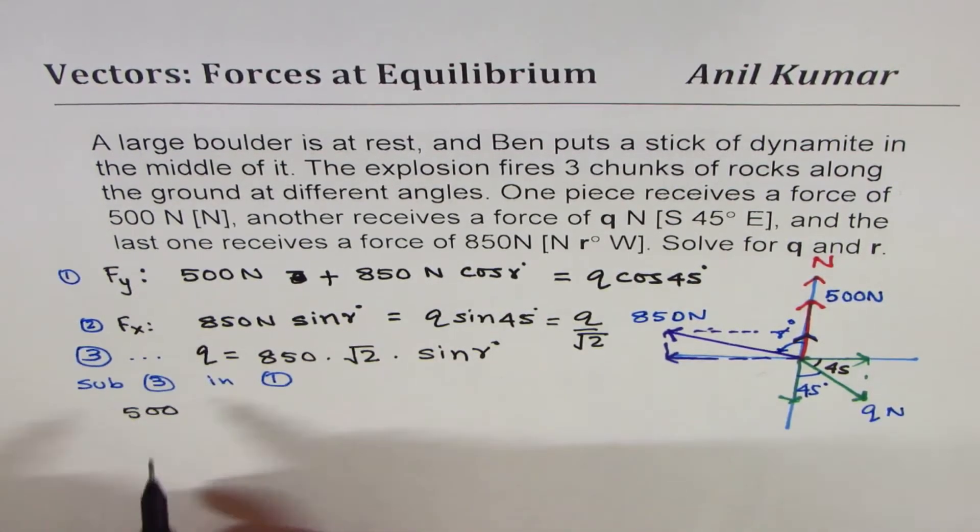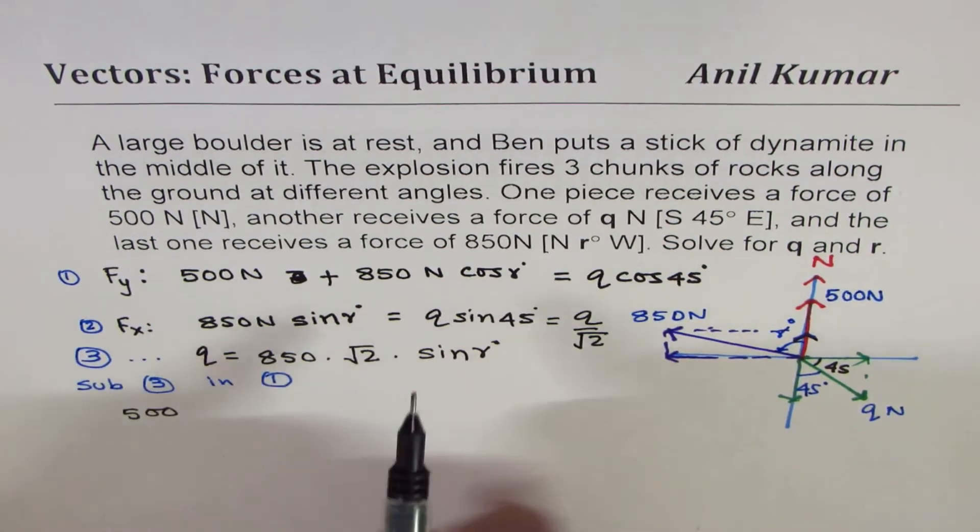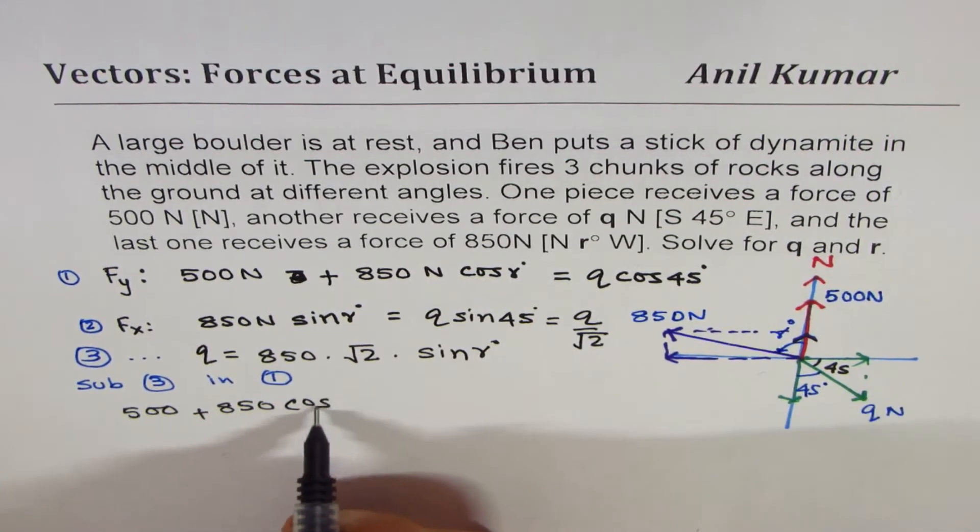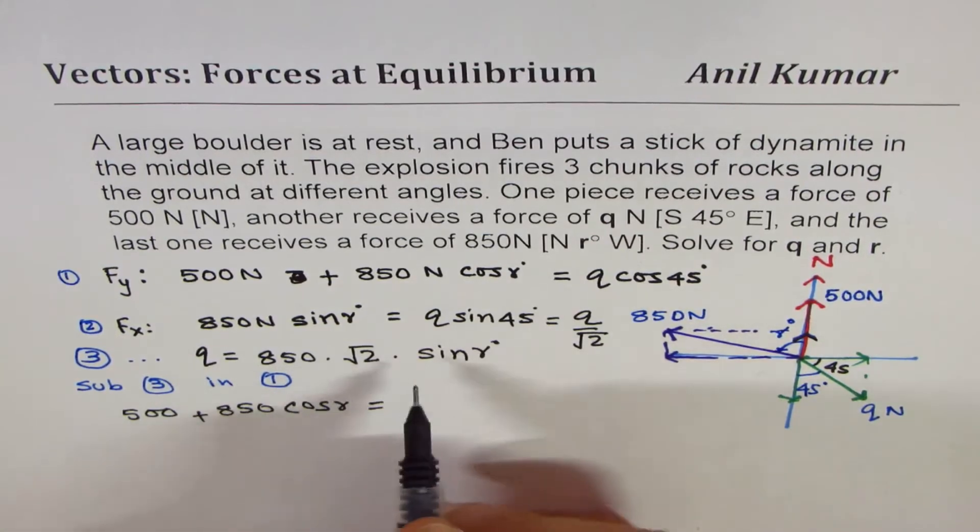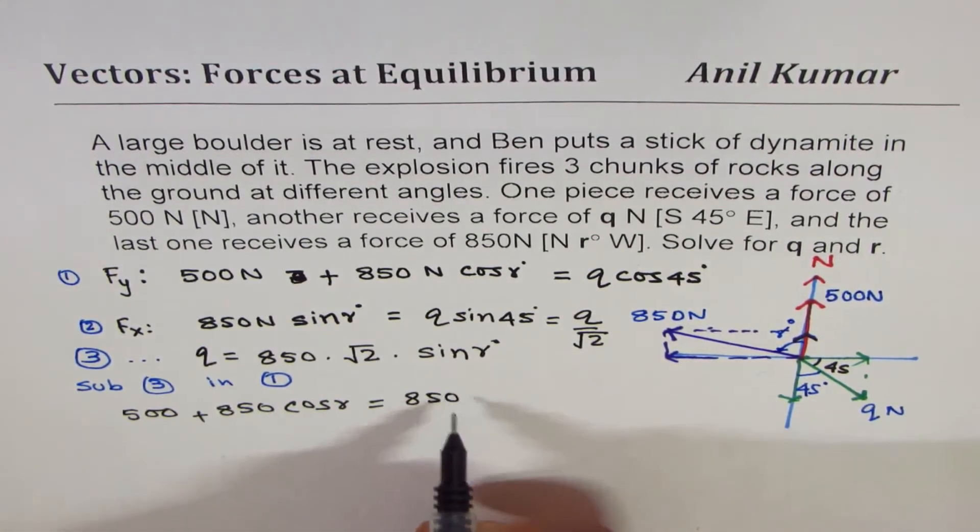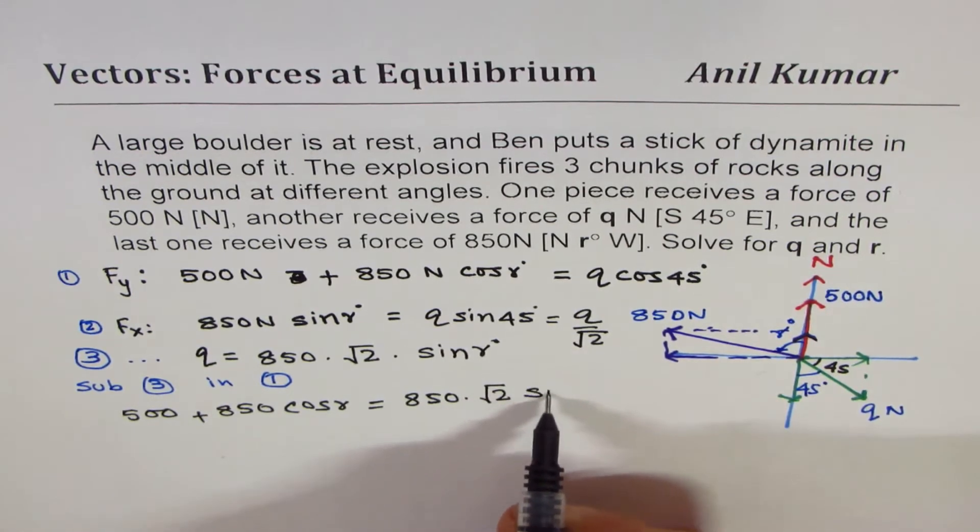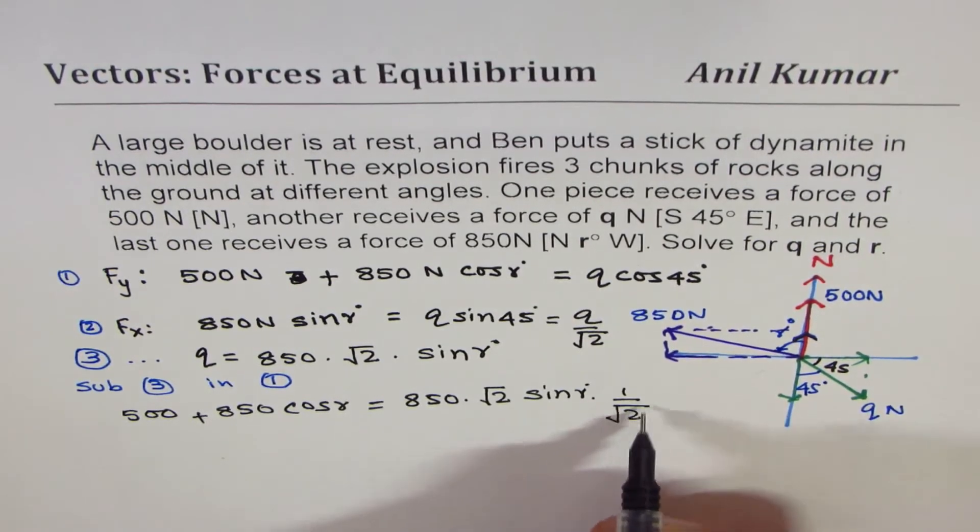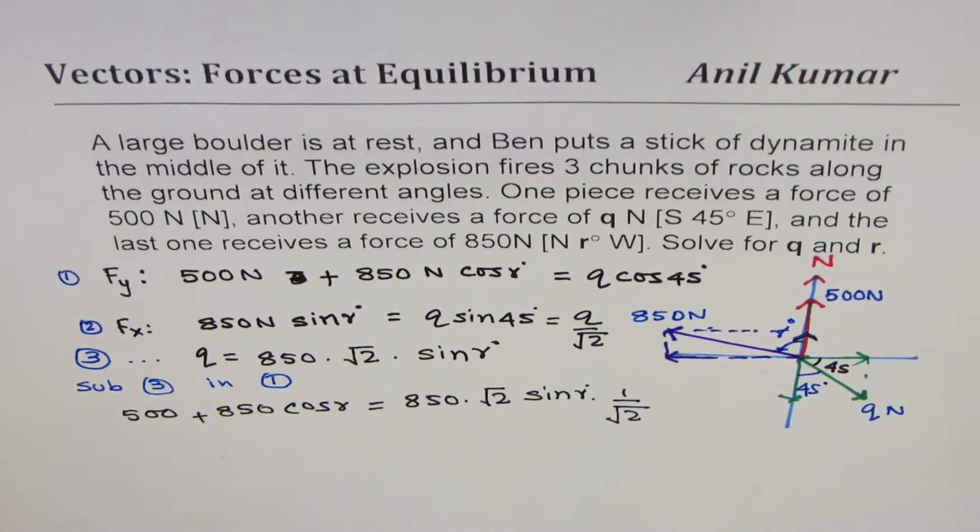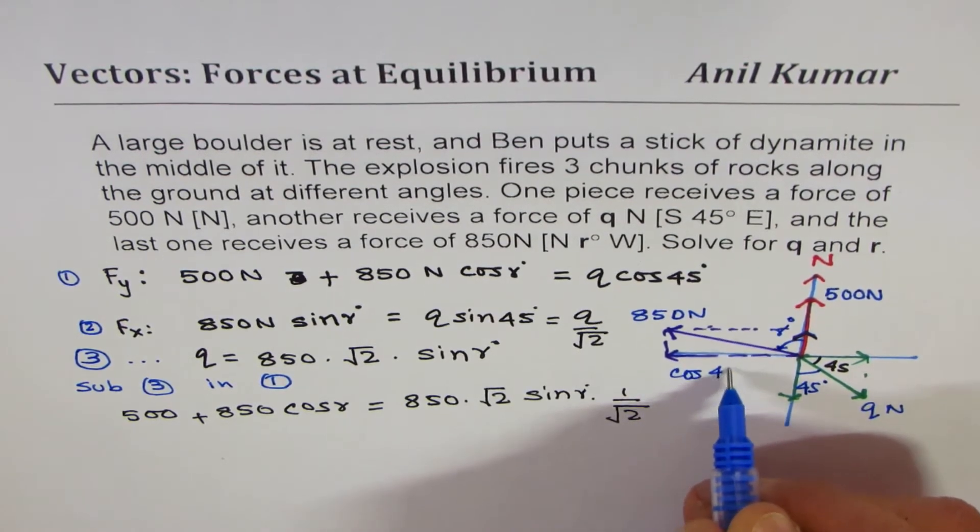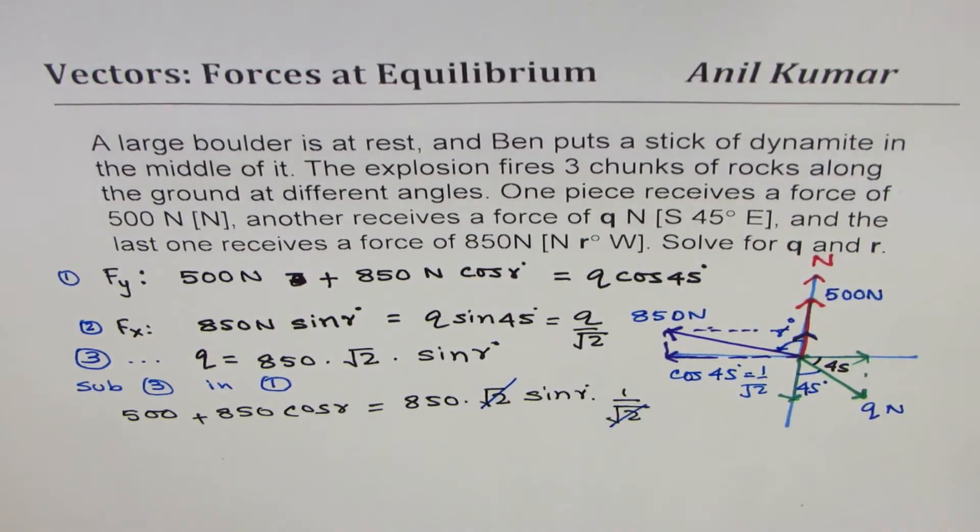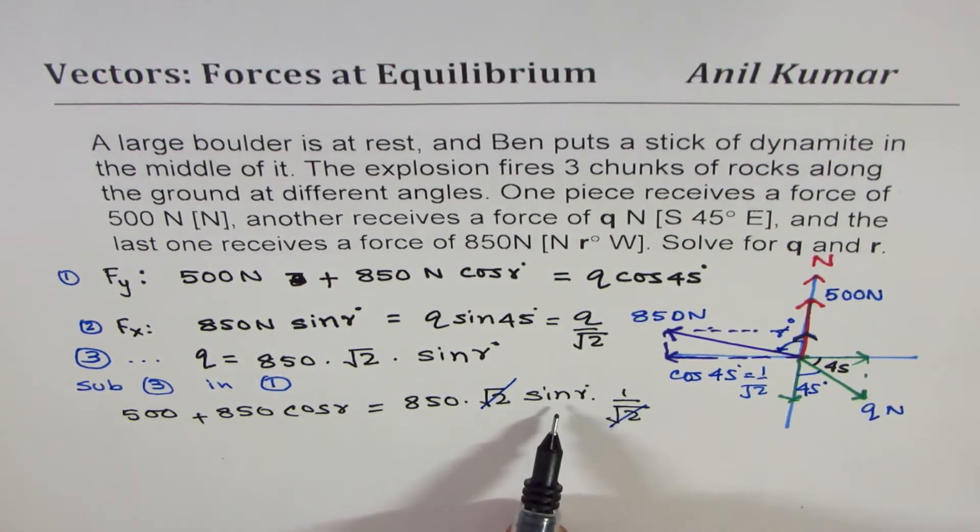So, let's substitute q as 850 square root 2 sine r. We already have 500, let's forget about newtons, we know all the units are in newtons, plus 850 cos of r equals to, instead of q, I'm writing 850 times square root 2 sine of r, and cos of 45 is 1 over square root 2. Since we know that cos 45 equals to 1 over square root 2, square root 2, square root 2, cancel.